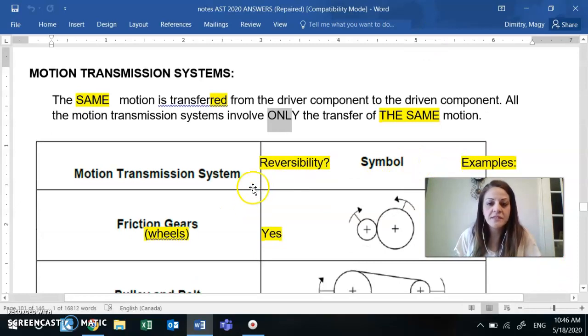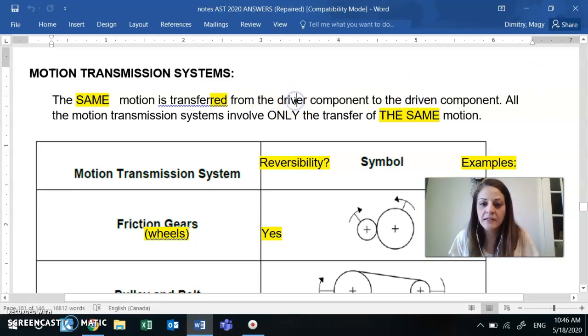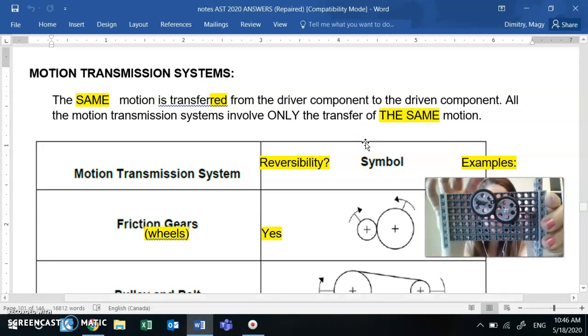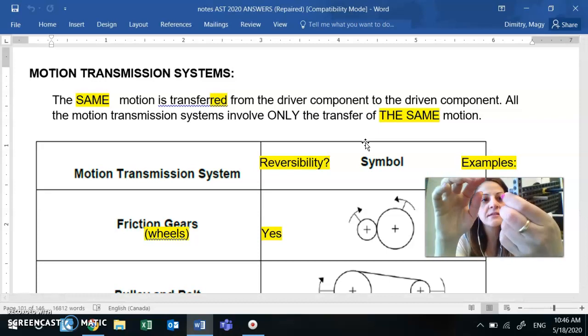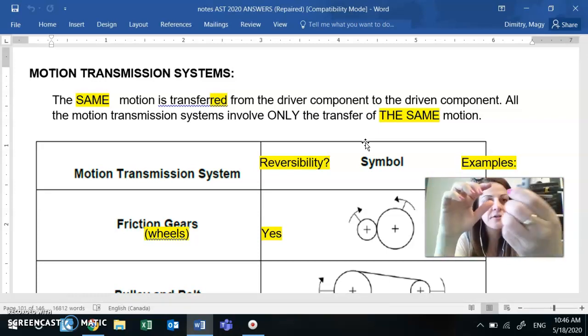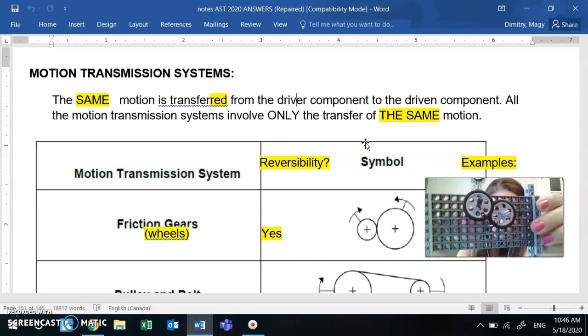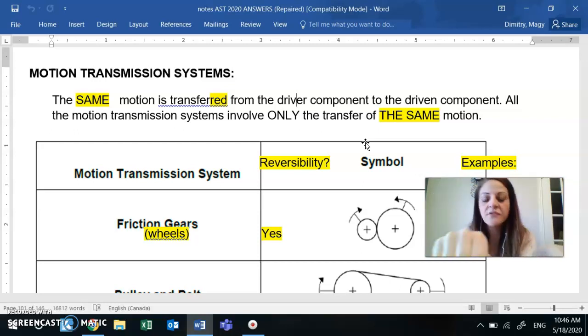Let's look at the first type. And I have to say the driven and the driver component, which I will get back to at the bottom of the page. Just want to show you, for example, here in this friction wheels. So let's say I'm looking at this one right here, letter B. This one becomes my driver.